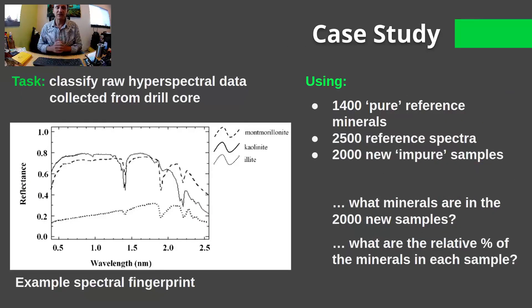So, case study. We went out, we set out to classify some raw hyperspectral data collected from drill core. In the drill core, we have 1,400 pure reference minerals from the USGS, which are known spectra. That is our training set. We have 2,500 reference spectra collection, sometimes more than one from each one of those reference minerals. And we have 2,000 new impure samples. We don't know what's in them. But they have gone through the hyperspectral analysis, and we have the raw data. What are the questions? What minerals are in the new samples? And how much of that given mineral is in that new sample?